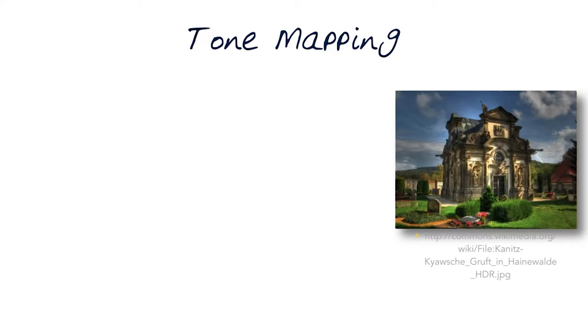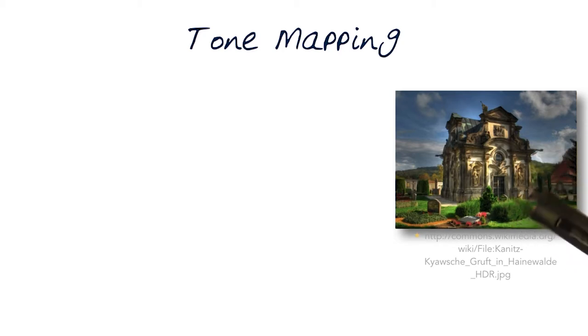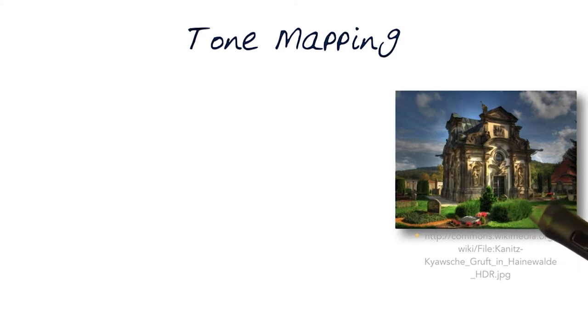The process we want to leverage is called tone mapping. Tone mapping is an attempt to take an image — a high-radiance image like the one we talked about, the radiance map — and converting it to a space where we can now actually visualize it.